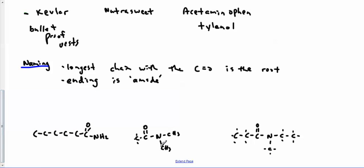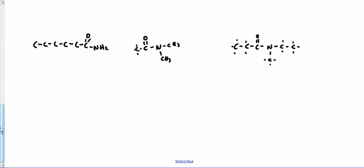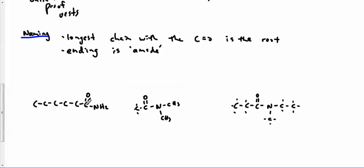Now, naming here, we take the longest chain with the C double bond O is going to be our root always. And the ending is amide. So here, I've only got Hs over here. So we've got one, two, three, four, five, six. So I'm looking at hexanamide.